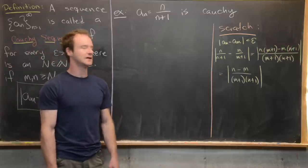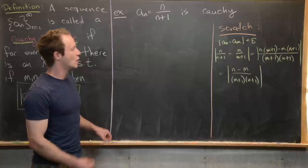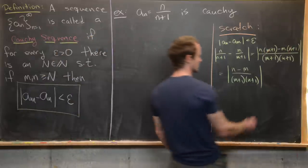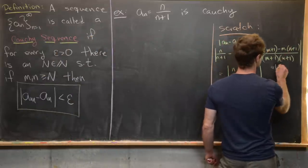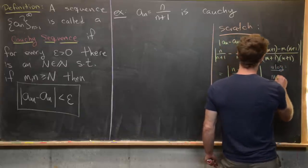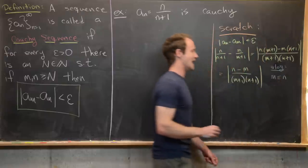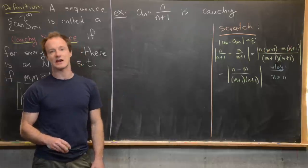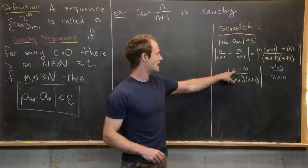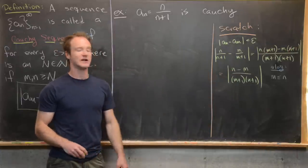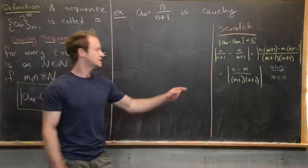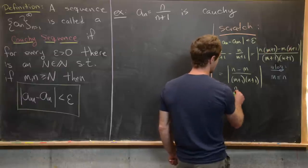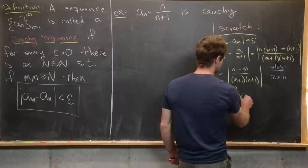Now we work with inequalities. Without loss of generality we may assume m ≤ n. So |n - m| ≤ |n|, which gives us the inequality |n - m| / ((m+1)(n+1)) ≤ |n| / ((m+1)(n+1)). We can simplify further by noticing that n/(n+1) < 1, so this is less than 1/(m+1).